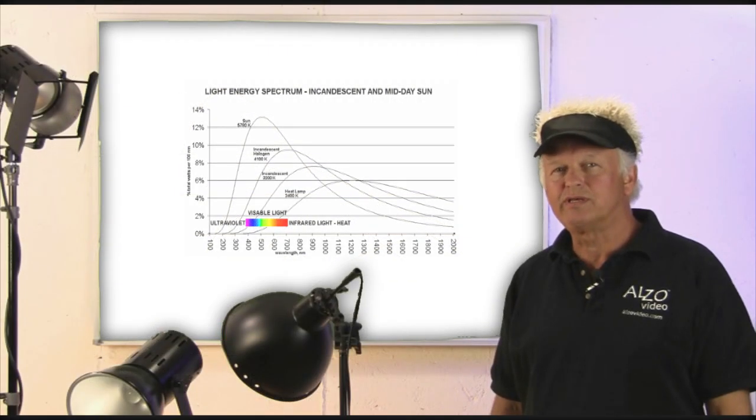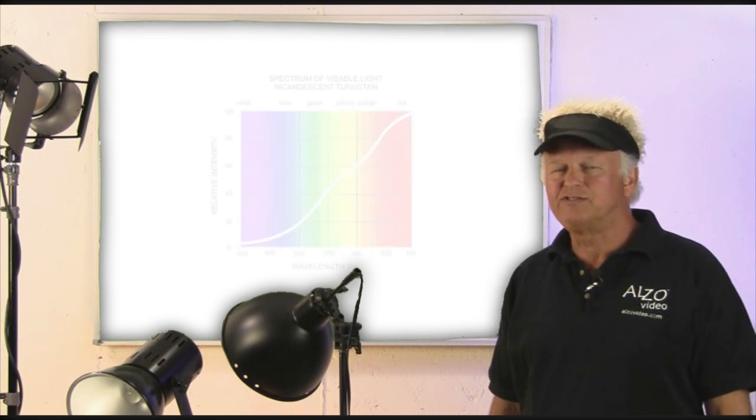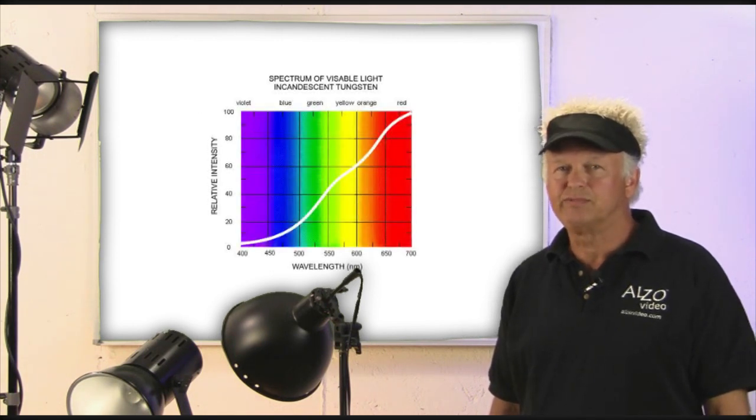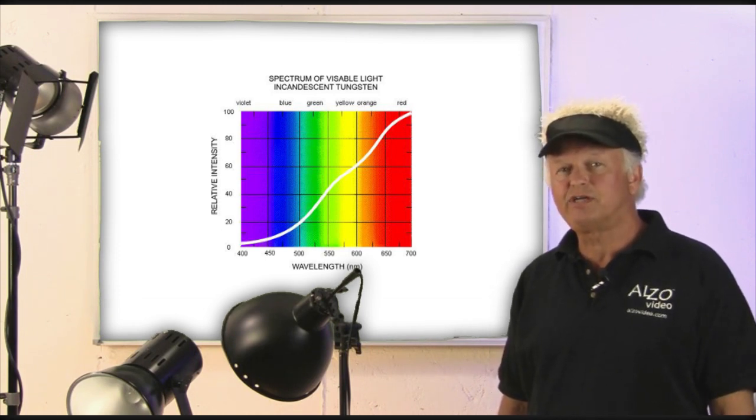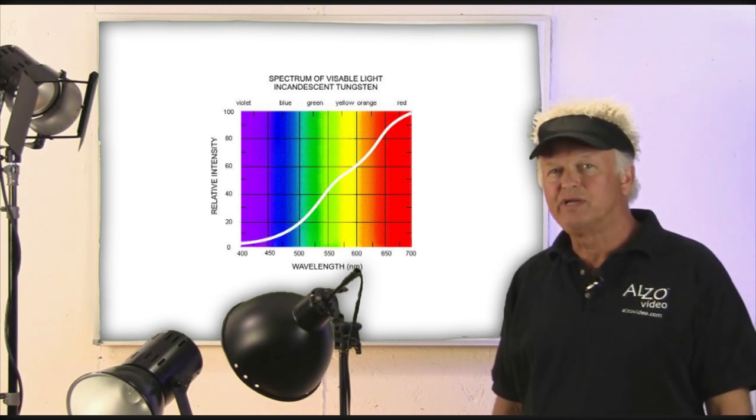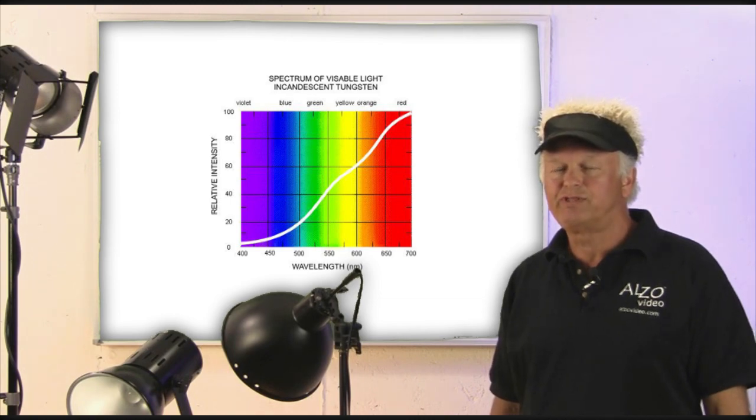More importantly, incandescent light is very weak in the blue part of the spectrum, and this can cause rendering issues with some cameras. We've been told by some of our customers that the RED camera has real rendering issues with incandescent light.